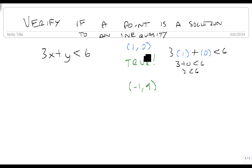This point works. This is a solution to the inequality, one of many. Let's try another one. Let's try (-1, 9). So now we're going to get 3 times (-1) plus 9 is less than 6.